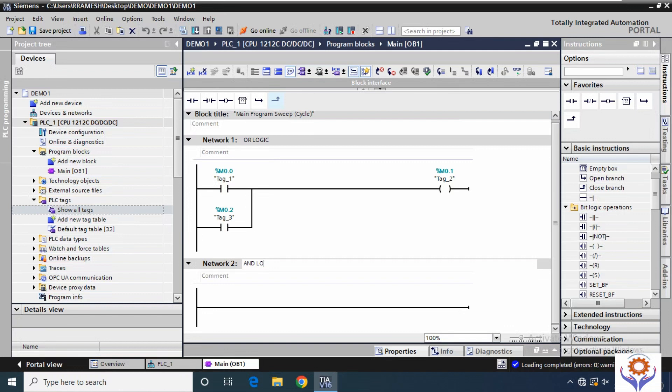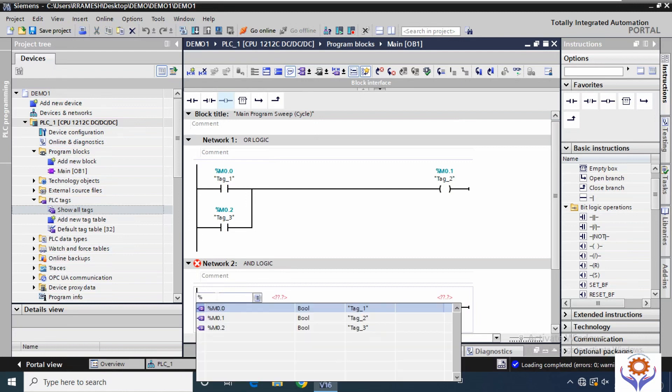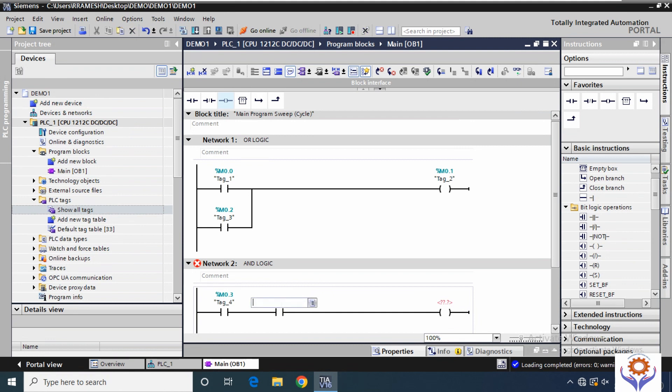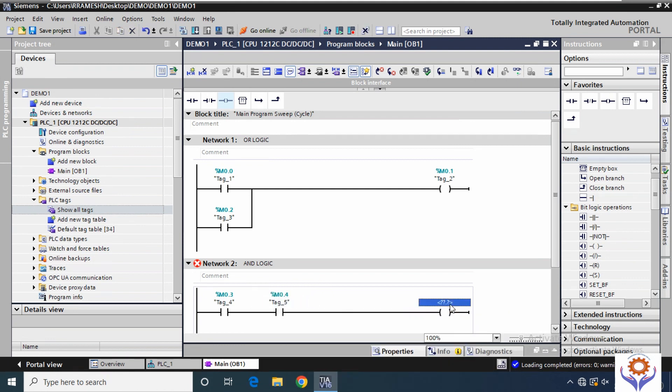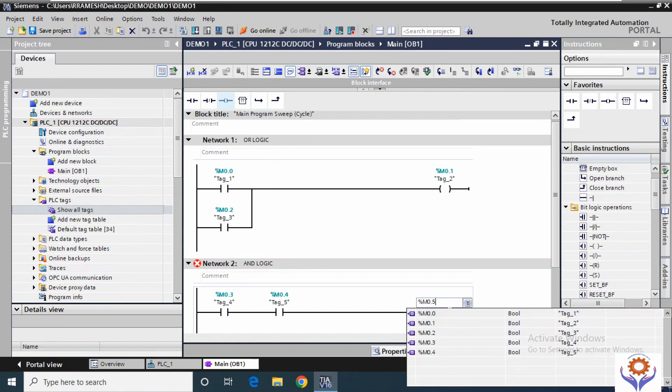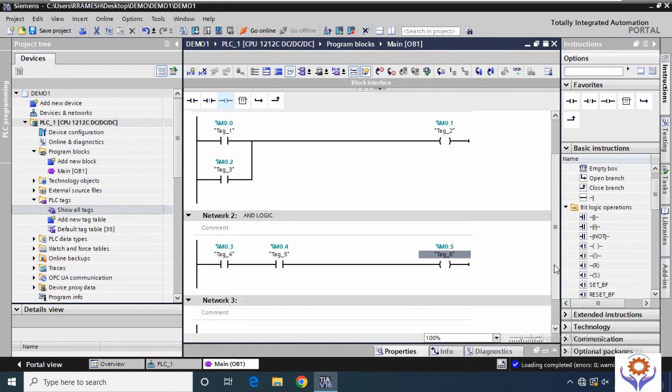Now we will move to AND logics. Add two inputs along with one output coil and %M0.3, %M0.4 for inputs and %M0.5 for output coil. Now we completed the AND logic and OR logic as per the gates.